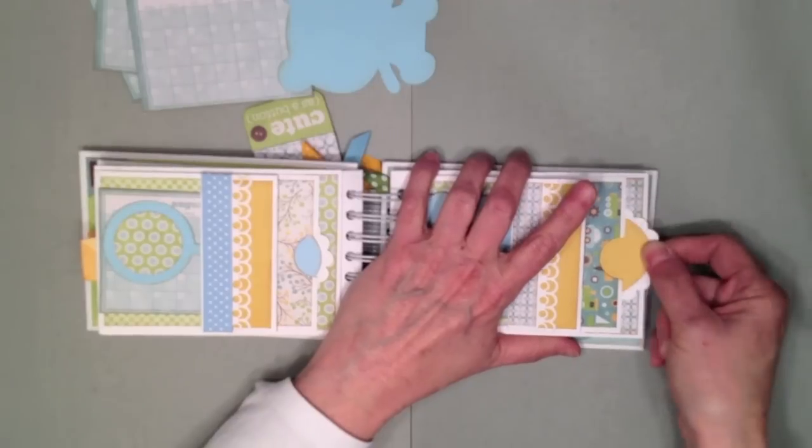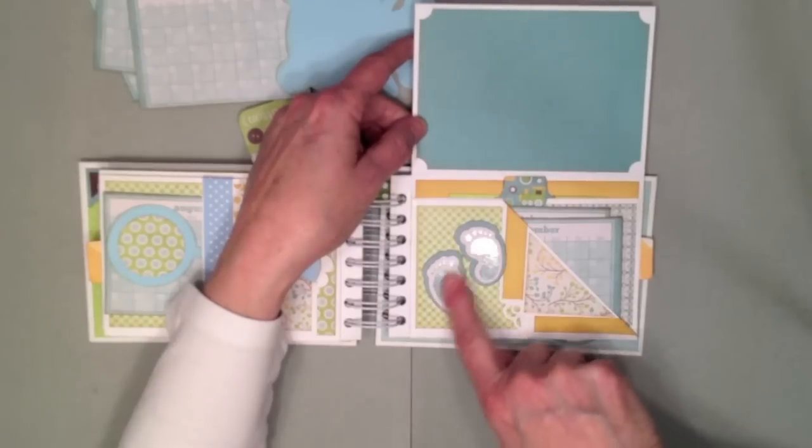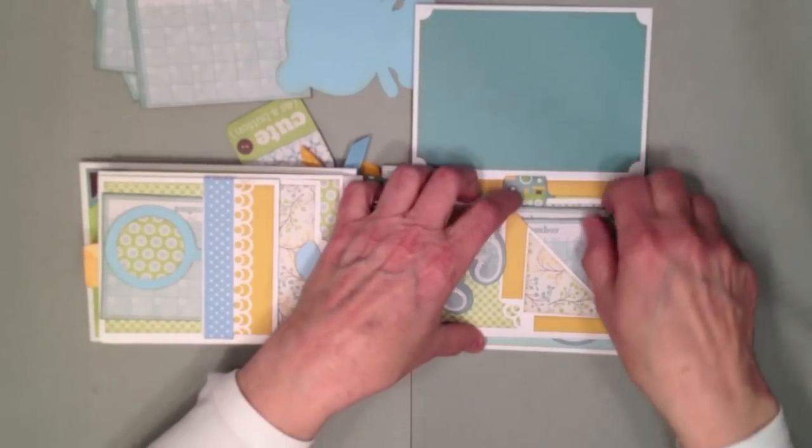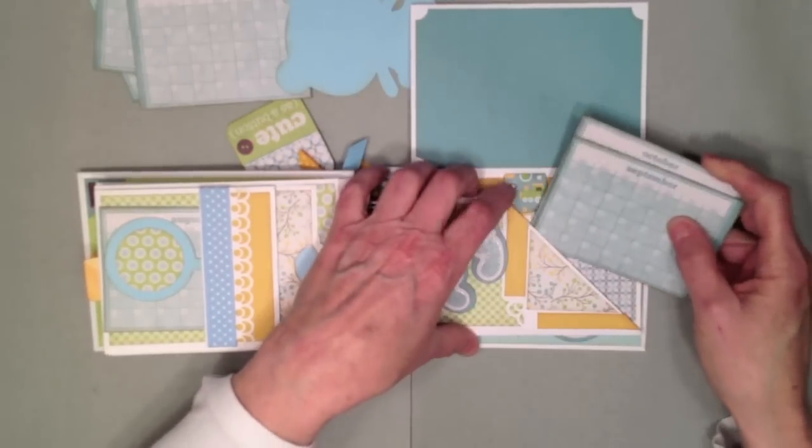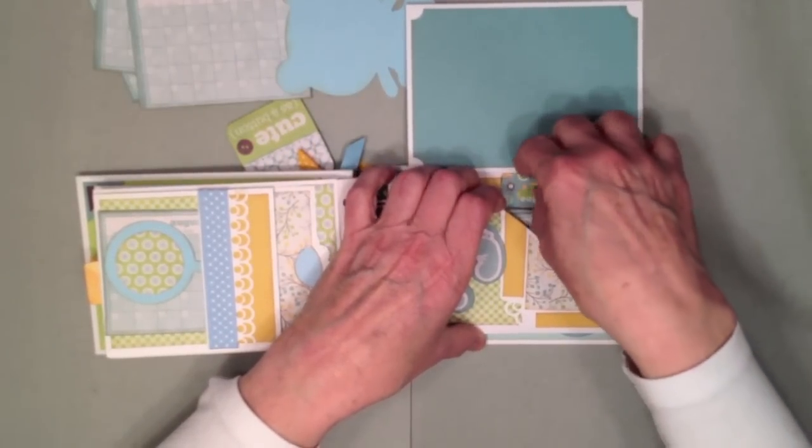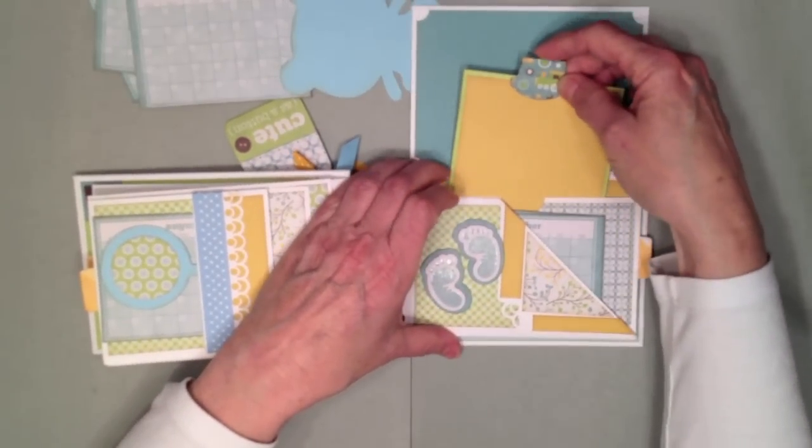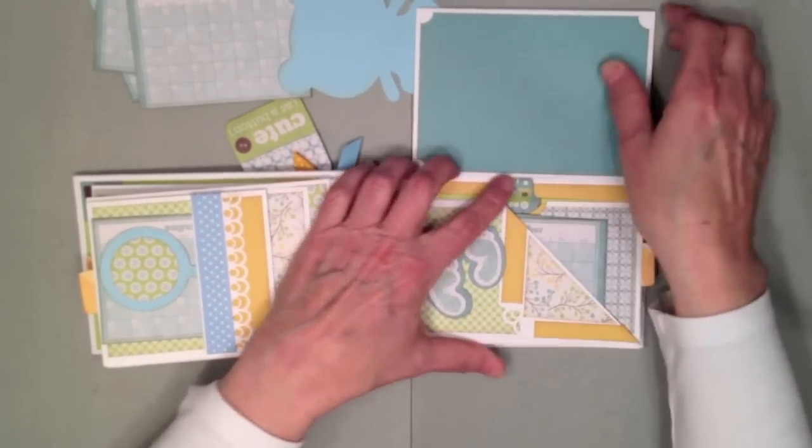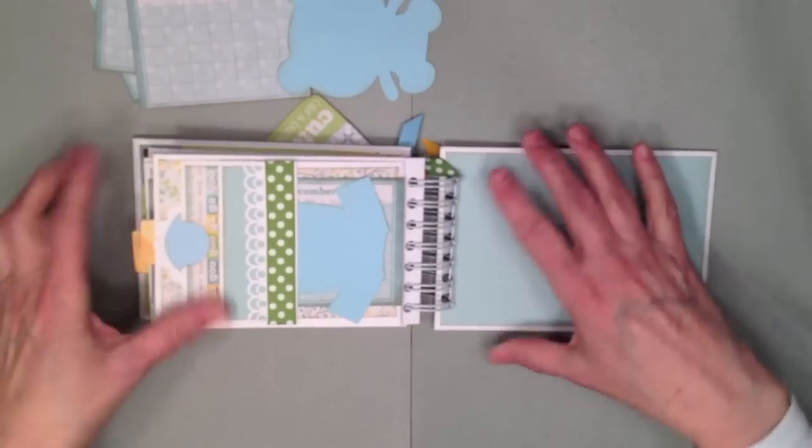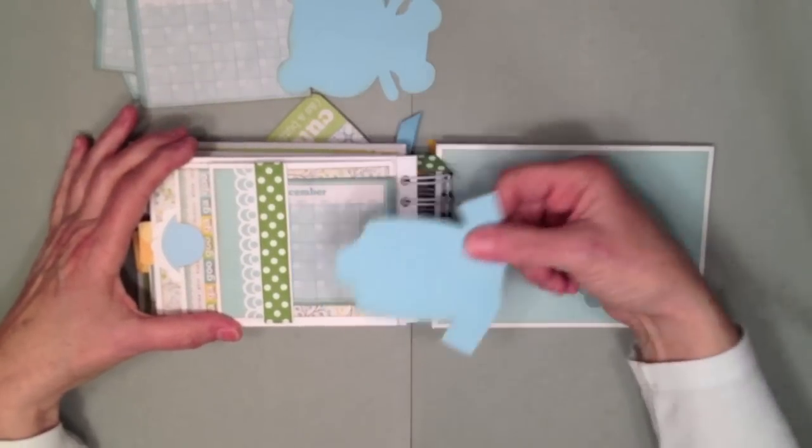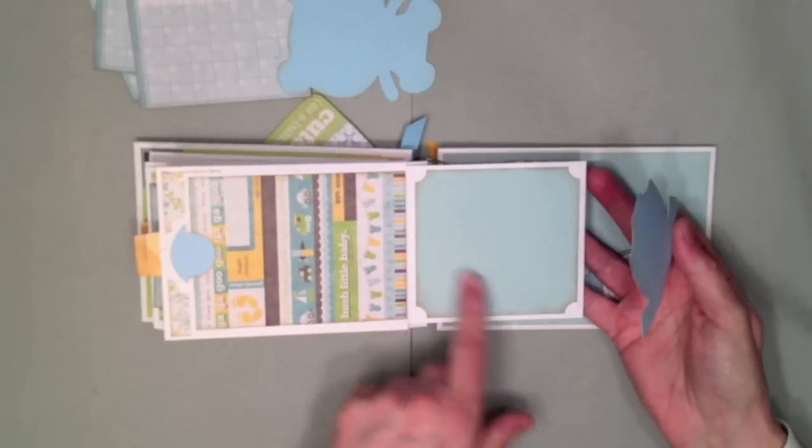So this flips open like this and again here is your photo mat right here. You can put a photo here. I thought this was darling, the little chipboard baby feet right here. Two more of the calendars, September and October, and another photo mat right here. This flips over and you have another onesie like this.